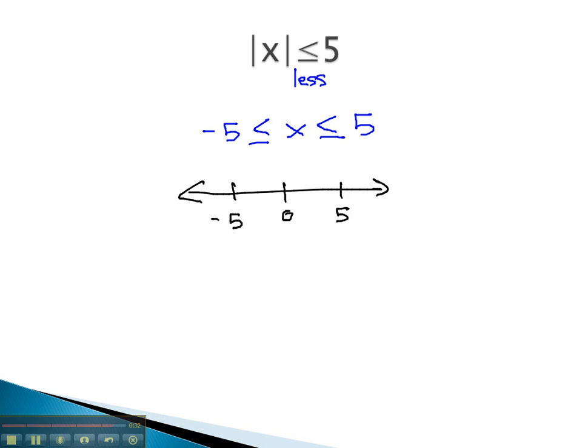So this means on the graph, we can see with closed circles at negative 5 and 5, because it's or equal to, the x is going to be somewhere in between. So the distance, or absolute value, is less than 5. In interval notation, square brackets to show or equal to from negative 5 to 5.